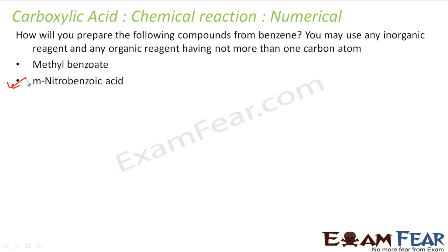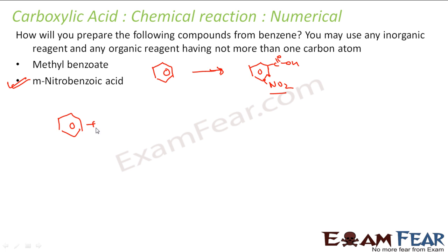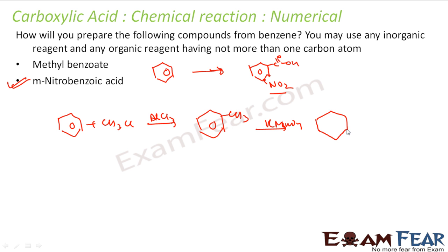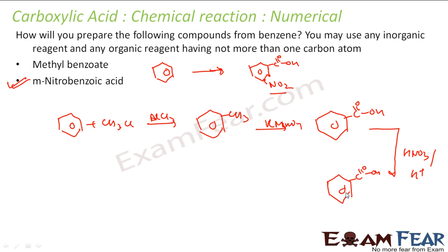Next: prepare m-nitrobenzoic acid from benzene. I need benzoic acid with nitro at the meta position. Since COOH is a meta-directing group and NO2 is an ortho/para director, we must first prepare COOH and then add NO2. Using CH3Cl with AlCl3 (Friedel-Crafts), get toluene; oxidize to benzoic acid; then nitrate with HNO3 in the presence of H2SO4 — COOH directs nitration to the meta position, giving m-nitrobenzoic acid.